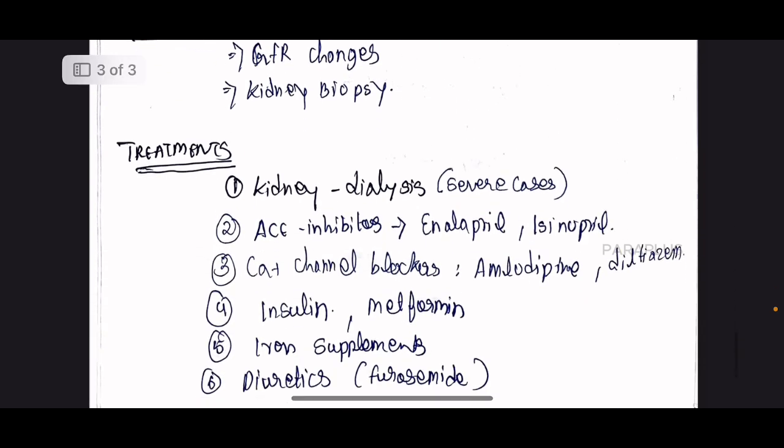For treatment of CKD — in severe cases, kidney dialysis is performed. A dialysis machine filters the fluid in place of the damaged kidney. Medications include ACE inhibitors or calcium channel blockers, insulin, and metformin to reduce sugar levels. Hypertension drugs, sugar-level drugs, iron supplements, and diuretics are also used to manage fluid accumulation.